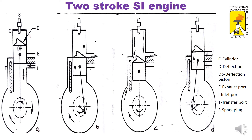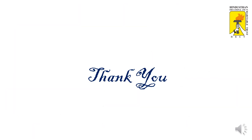As the piston reaches BDC, the transfer port is uncovered and the compressed air-fuel mixture passes from the crankcase to the top of the cylinder. The piston moves upward again, the inlet, exhaust, and transfer ports are all closed, and the air-fuel mixture is compressed. The inlet port at the bottom is again uncovered so fresh mixture enters the crankcase, while the top mixture takes ignition. This process continues in a cyclic manner. This is the working principle of the two-stroke SI spark ignition engine. Thank you, my dear students.